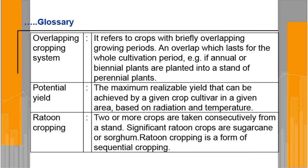Overlapping cropping system refers to crops with briefly overlapping growing periods, where the overlap lasts for the whole cultivation period — for example, if annual or biannual plants are planted into a stand of perennial plants. This mainly happens when the present crop is being harvested but before harvest, the other crop is already sown.